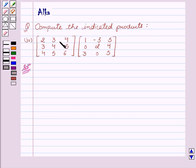Our given matrix is 2, 3, 4, 3, 4, 5, 4, 5, 6 and second matrix is 1, minus 3, 5, 0, 2, 4, 3, 0, 5.